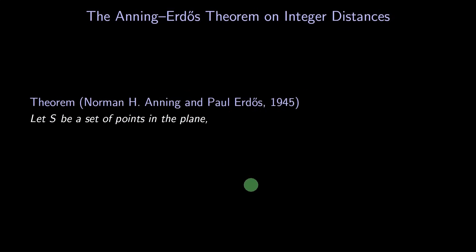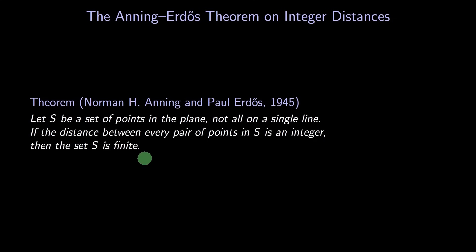That's the theorem of Anning and Erdős that I mentioned at the beginning. We'll state it in this form. Let S be a set of points, not all on the same line. Suppose the distance between every pair of points in S is an integer. Then S must be finite. It can't be infinite.